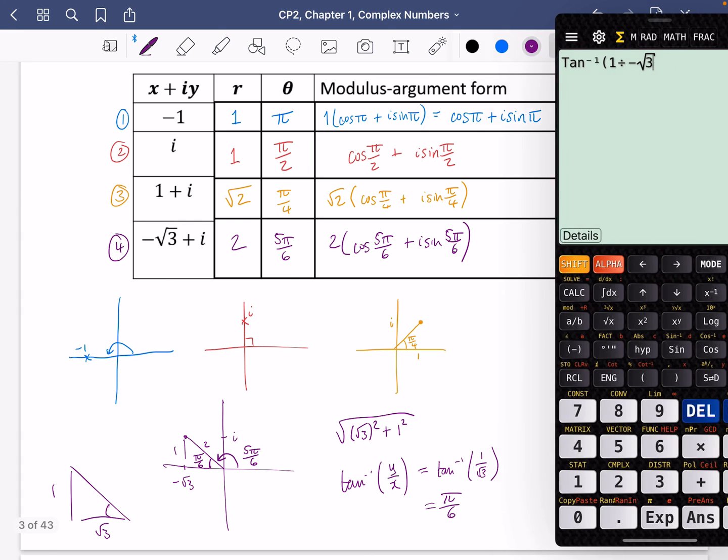You could check this answer because I could do the cos of five pi over six and multiply that by two, and I do get the negative root three that I have here. And I could also do the sine of five pi over six and multiply it by two, and I do get the one i that I have here. So it does actually work, and you can check these things out as well.